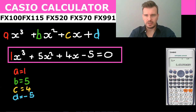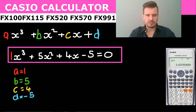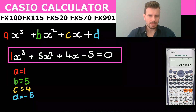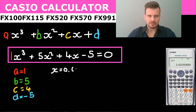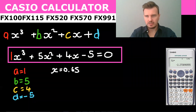So x₁ is equal to 0.65. I can write that down: 0.65. Then I press equals again.